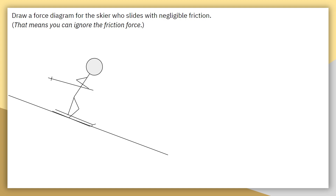We are going to see another example of constructing a force diagram. In this situation, we are to draw a force diagram for a skier who slides with negligible friction. Whenever you see negligible friction, that means we can ignore the force of friction acting on the object. Step zero has already been drawn for us — we have identified our system and its surroundings — so we can move on to step one of constructing our free body diagram.